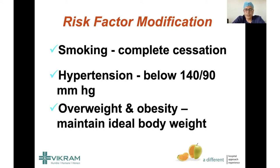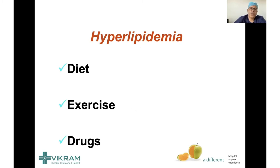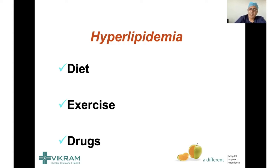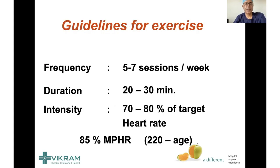For overweight and obesity, maintain your ideal body weight or within plus or minus 5 kg. Most patients can have a home electronic blood pressure instrument, which gives good and correct values in most situations. For cholesterol, drugs come into the picture when diet and exercise fail. In acute heart attack situations, we need to keep cholesterol artificially low through medicine because diet and exercise alone cannot reduce it to very low levels. All three approaches — diet, exercise, and medicine — are important and should not replace each other.